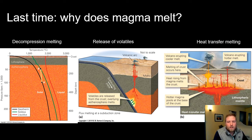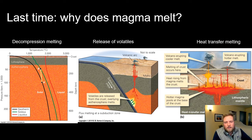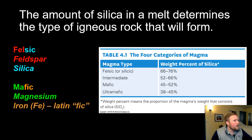The other reason magmas melt is due to the release of volatiles. As Earth materials are recycled back towards Earth's interior through plate tectonics, volatiles — things like gases including water, carbon dioxide, and sulfide gases — are subducted back down. Volatiles literally do not like to stay in the solid state; they react with surrounding rocks and that reaction can break down rocks and cause them to turn into a melt. The third way is through heat transfer melting, where rising magma from deeper in the mantle comes up towards the crust, begins to melt the crust around it — basically melting by conduction. It's like putting your hand on the side of a boiling pot of water.